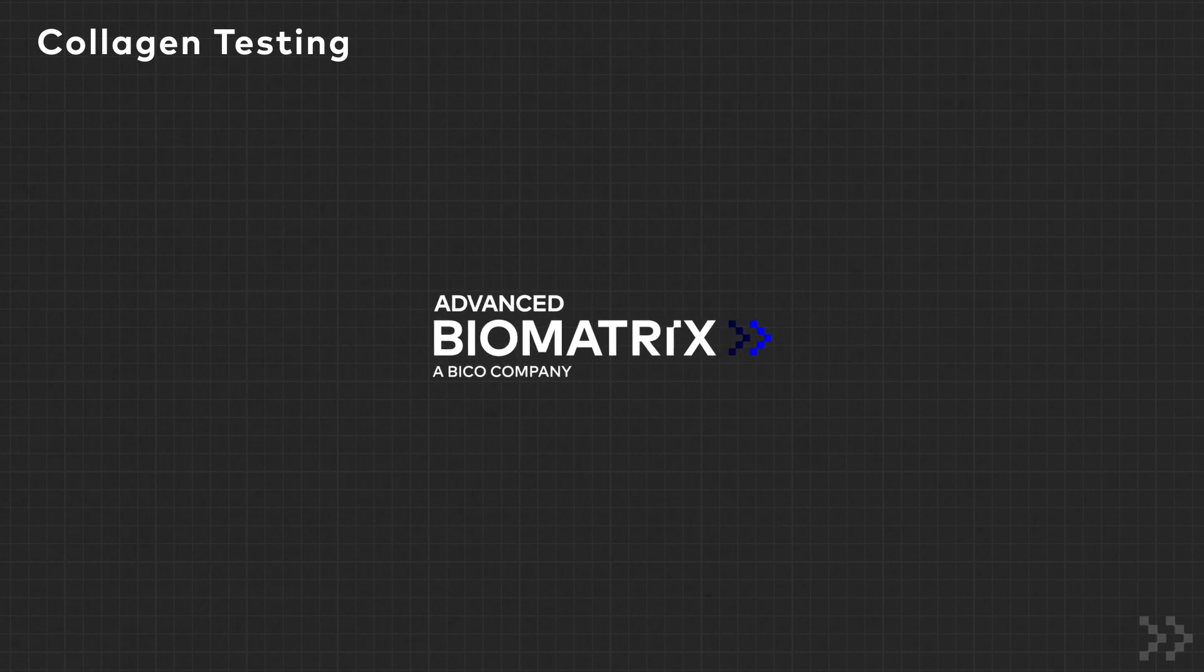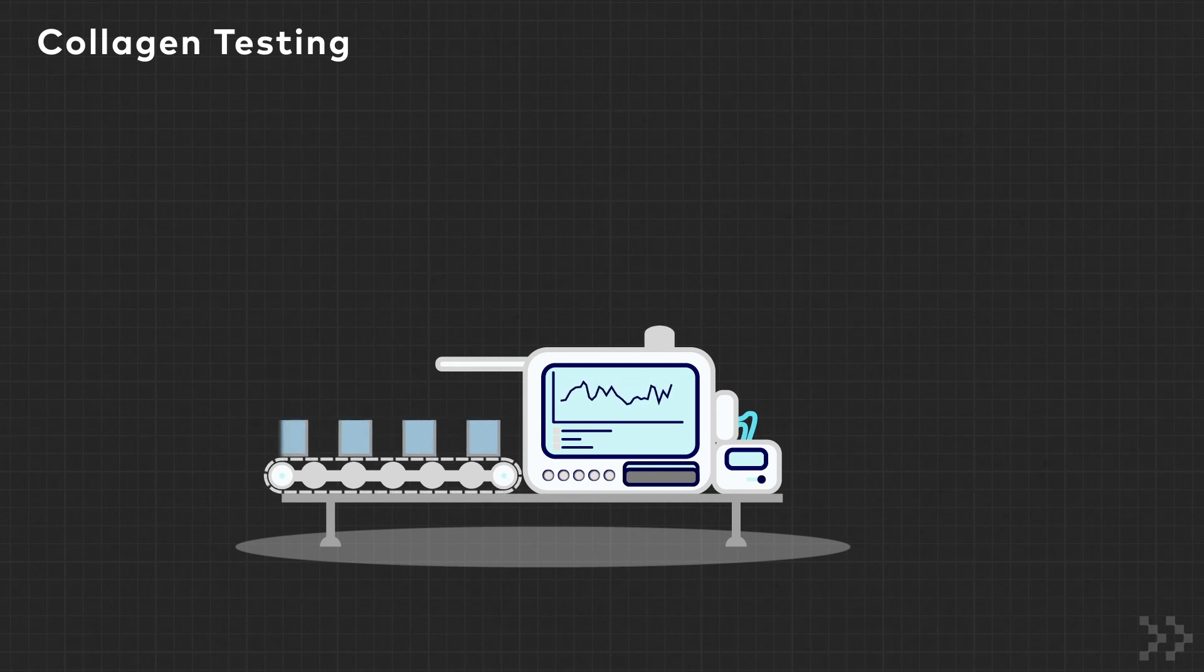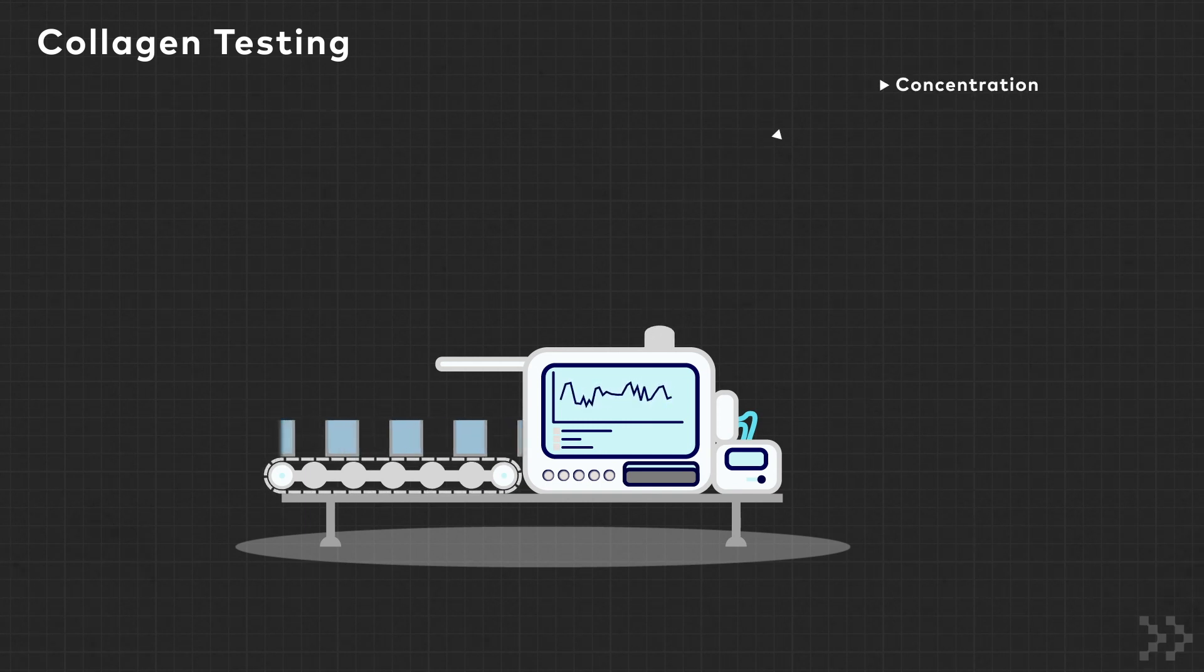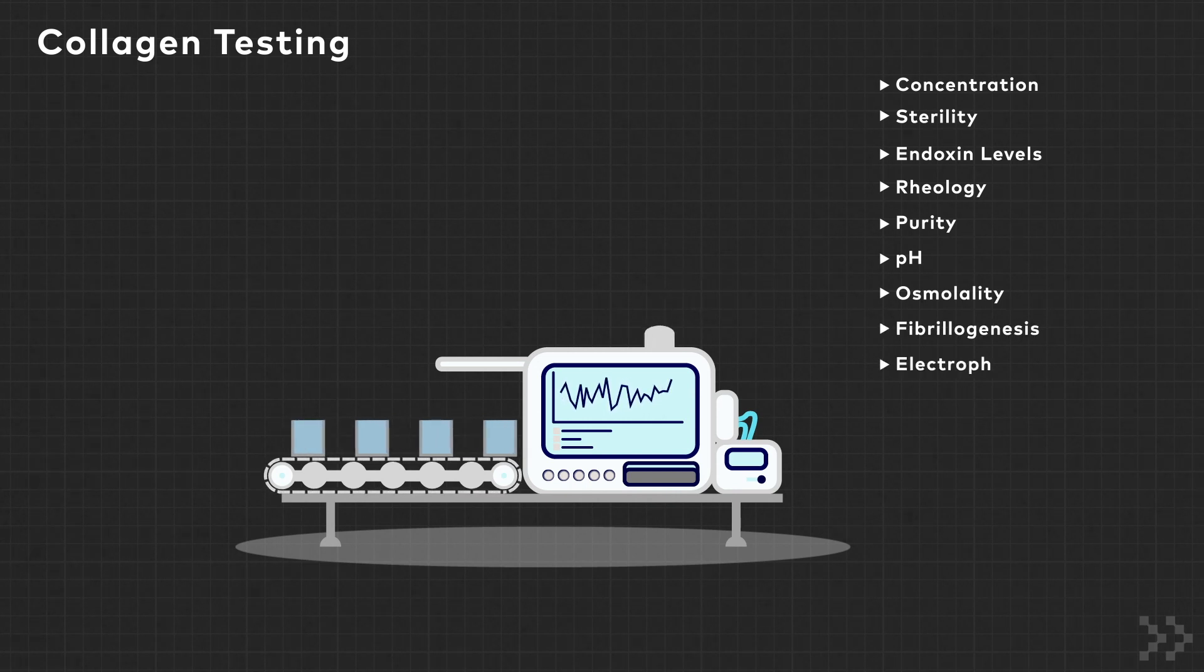At Advanced Biomatrix, we pride ourselves on quality, reproducibility, and availability of our product. To ensure this, we perform more testing on our collagen than anyone else. These tests include collagen concentration, sterility, endotoxin levels, kinetic gel tests and rheology, purity pH, osmolality, fibrilogenesis, and the electrophoretic pattern via SDS page Coomassie Blue. With narrow specifications for our collagen products, we help to ensure you get consistent results in the lab.